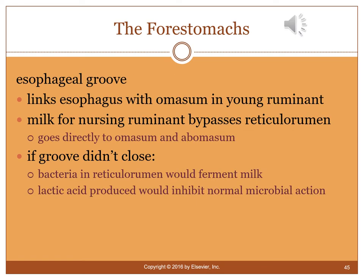The esophageal groove is important for young ruminants. It bypasses the reticulum and rumen, sending milk directly from the esophagus into the omasum and abomasum, since young animals are not yet eating grass and don't need fermentation bacteria. If milk spilled into those two forestomachs, the bacteria there would ferment it, producing lactic acid and causing the animal to become acidotic.